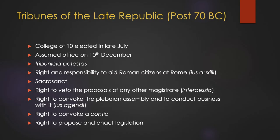Tribunes, like consuls and other magistrates, possessed the right of intercessio. This enabled them to interject against the actions of any other magistrate, senior or junior. This was the power to veto — literally, 'I forbid it.' This was also enjoyed by the consuls, who could veto one another, and junior magistrates.